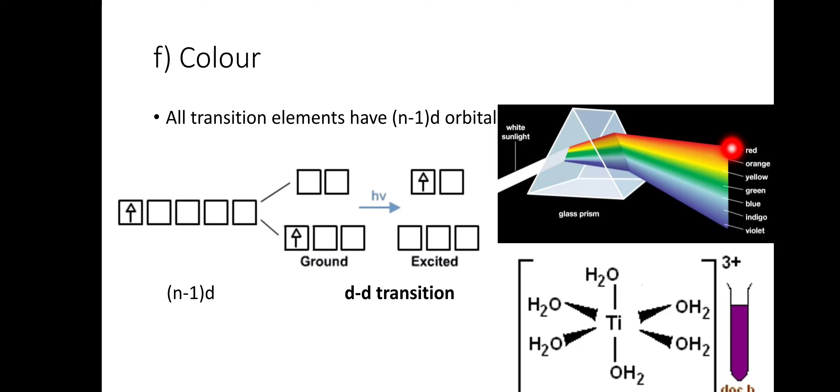Just like sunlight, titanium falls on the prism. They absorb yellow light and transmit the red and blue color, and the titanium solution produces the violet color.